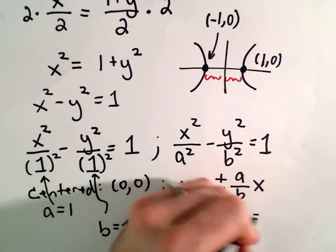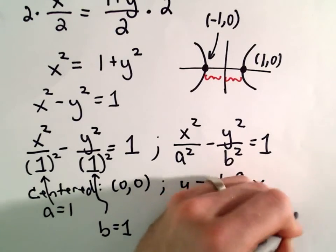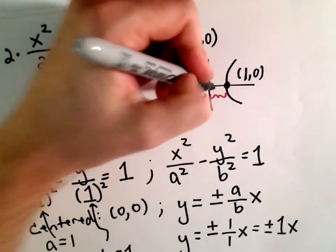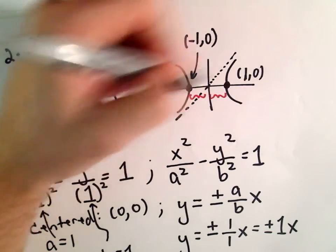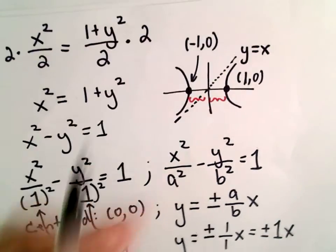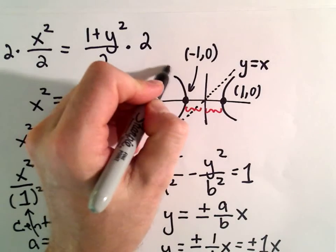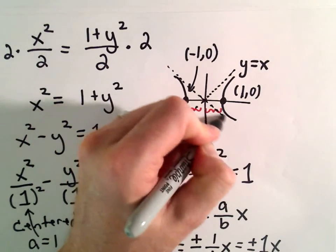So our asymptotes will be of the form positive-negative 1 over 1 x, which will just be positive and negative 1x. So y equals positive x will be one of our asymptotes. So there's y equals positive x. And then y equals negative x will be one of our other asymptotes.